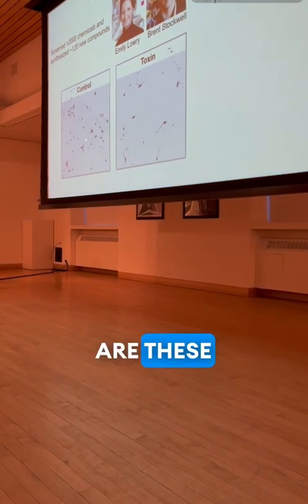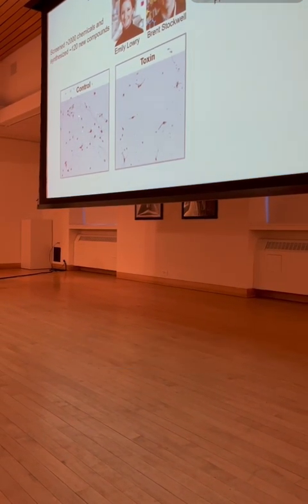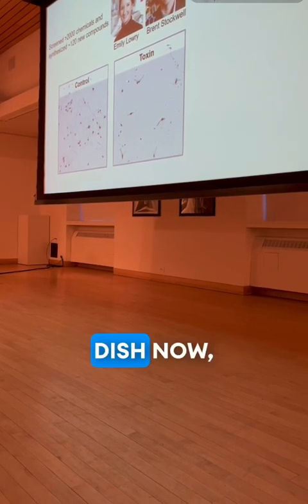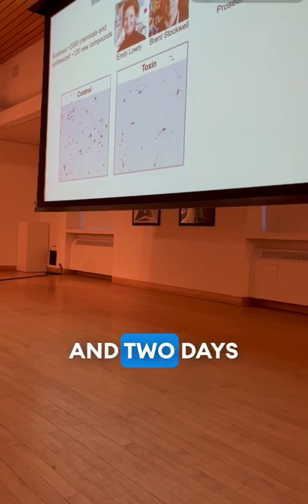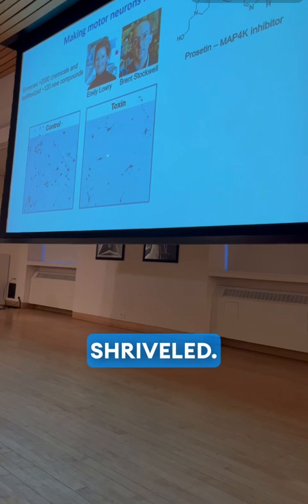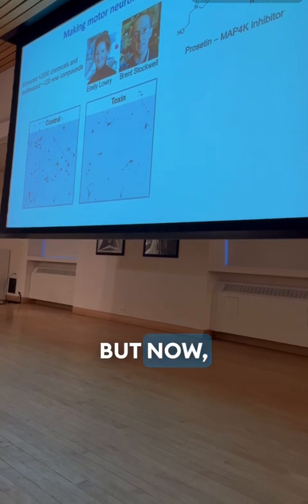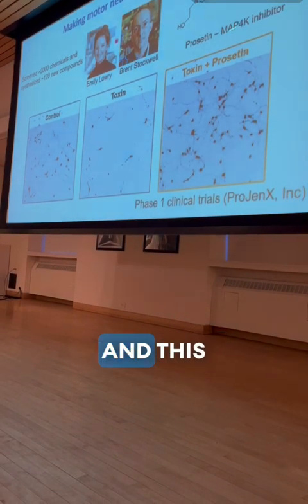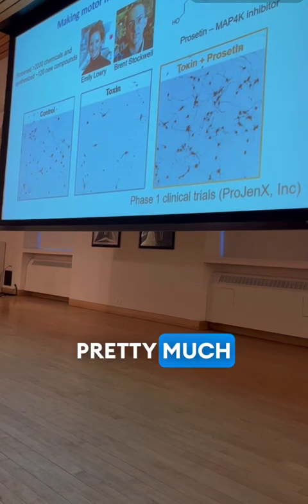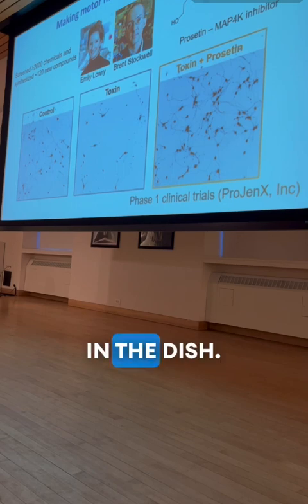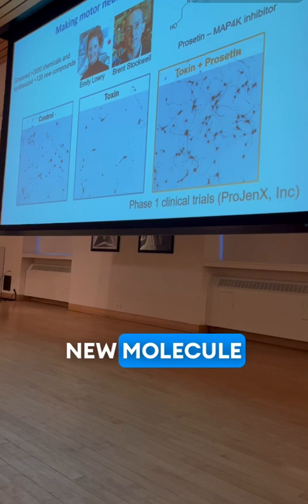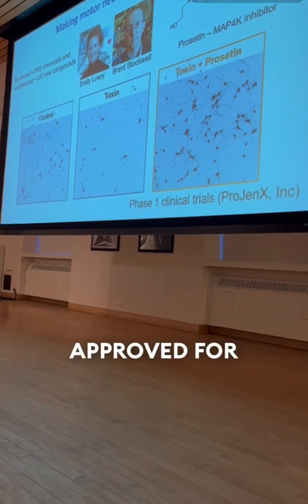Together with Brent, we found one compound that he synthesized that is very important in protecting motor neurons. You can see motor neurons as these black dots with their processes growing out. This is a control culture. Now you expose the cells to the toxin, and two days later most cells died and the processes disintegrated. But if you expose them to the toxin and add this small molecule inhibitor, you can very effectively protect pretty much all motor neurons in the dish.